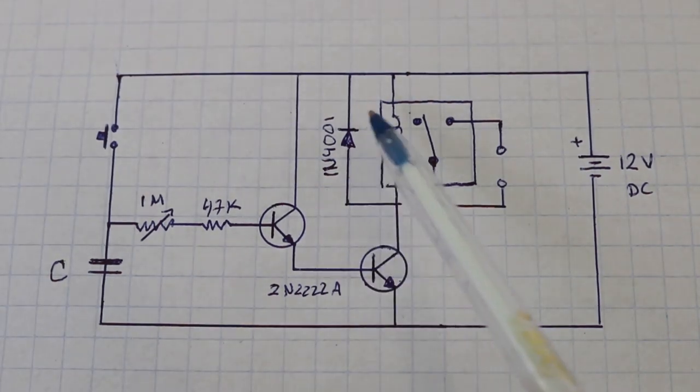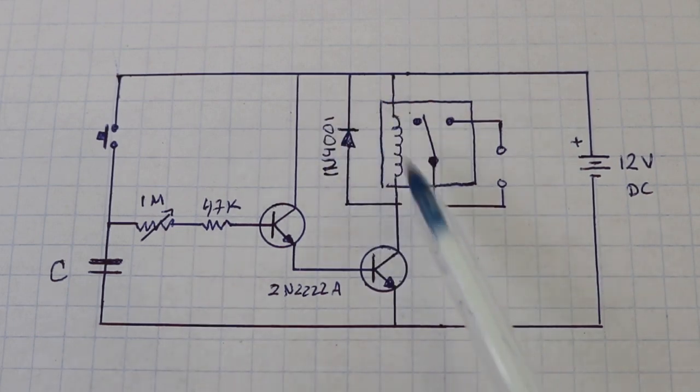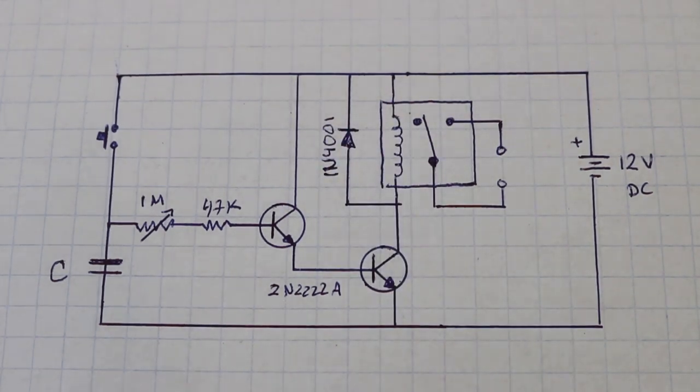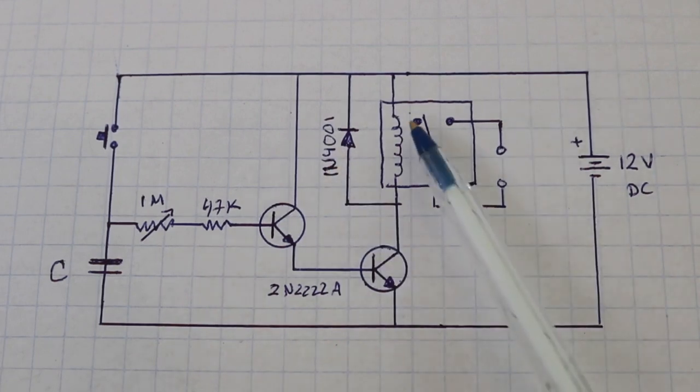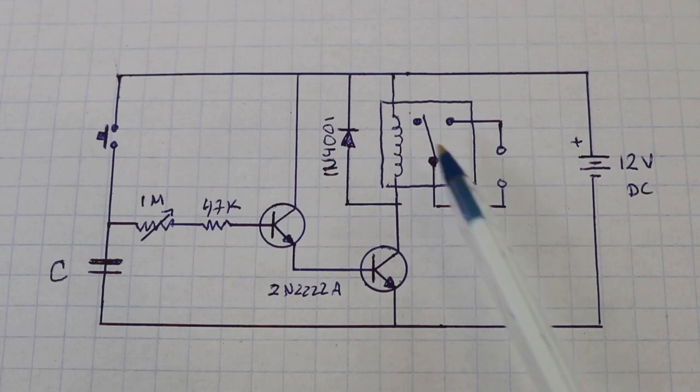Finally, here we have a diode connected between the terminals of the coil which is the diode that is always used whenever we have a relay in a circuit. The diode prevents the voltage spikes that are produced in the coil when the relay is de-energized.